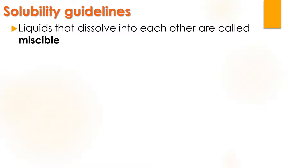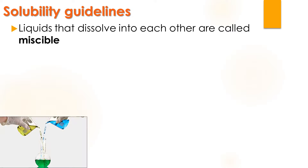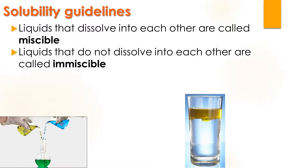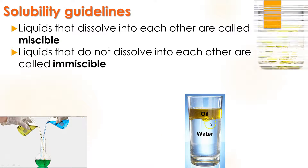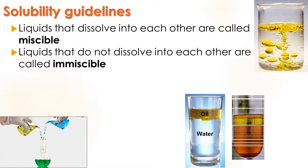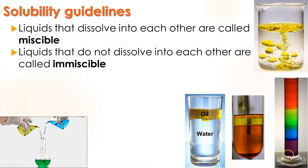Some guidelines for solubility. Anytime you have liquids that dissolve into each other, we say they are miscible. Here I have a yellow and a blue liquid mixing together — they are miscible. Anytime two liquids do not dissolve into each other, that's called immiscible. A common example is oil and water — one is hydrophobic, one is hydrophilic, so they don't mix. If you drop oil into water, it forms little clumps, and if you let it sit long enough you get separate layers. You can even get a rainbow mixture of different densities with soluble dyes, but of course they don't want to mix with each other.